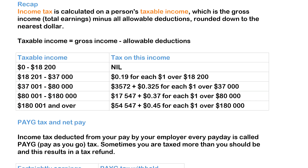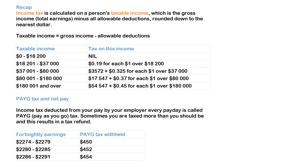To recap: income tax requires your taxable income first — that's gross pay minus all your deductions. You then use your taxable income to find your income tax by picking the bracket you fit into. For example, if you're in the last bracket, it's $54,557 plus whatever you owe over the limit stated in the table. PAYG is pay-as-you-go tax, and net pay is gross pay minus tax minus any other deductions.